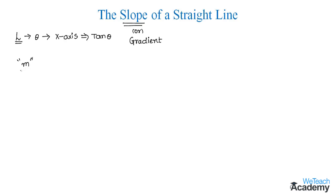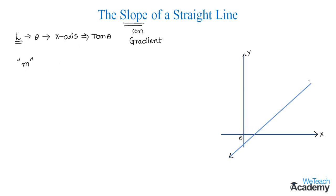Let me explain this definition using a diagram. Consider a non-vertical straight line L which makes an angle theta with the x-axis, measured in the positive direction of x-axis. Then tan theta is called the slope of line L.